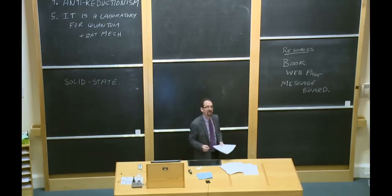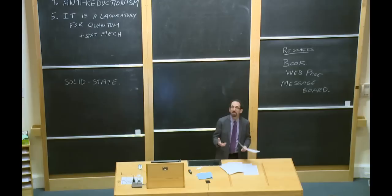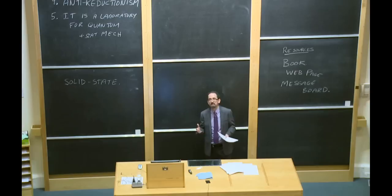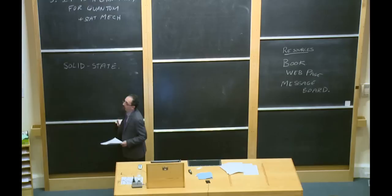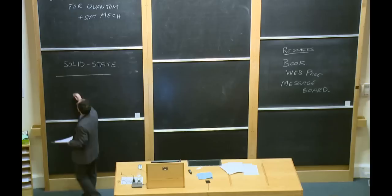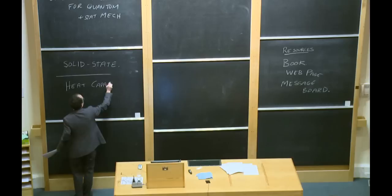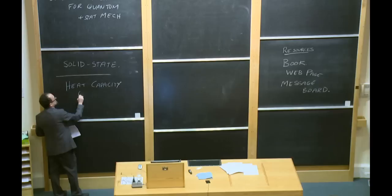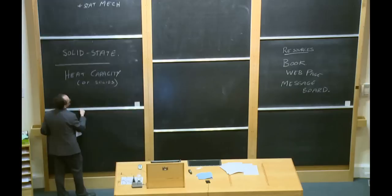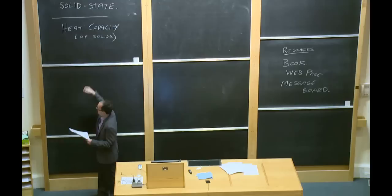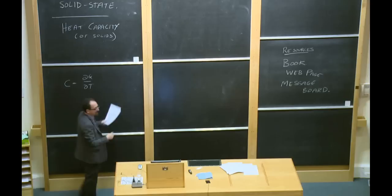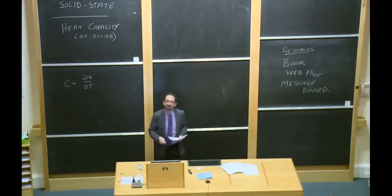Over the course of the 1800s, scientists were able to make increasingly precise measurements and had figured out a lot about the world around them. But there were many measurements where they could see what was going on but couldn't understand why they were getting the results they were. For the next two lectures or so, we're going to focus on one particular type of experiment they had been doing a lot of: experiments on heat capacity — and in particular, heat capacity of solids.